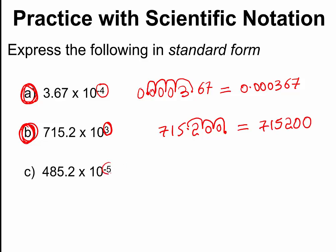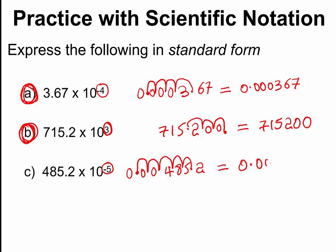In the last example, the exponent is negative 5, which means we make the number smaller. Starting with 485.2, we count 5 places and fill with zeros. The original number is 0.004852. Converting a number to scientific notation is very straightforward, and converting back from scientific notation to decimal form is also very easy.